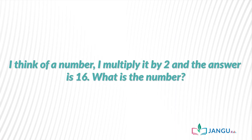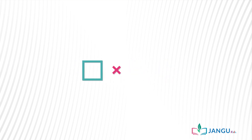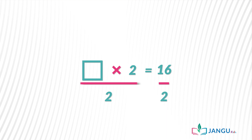I think of a number, I multiply it by 2, and the answer is 16. What is the number? So can you solve the puzzle? Unknown × 2 = 16. We divide each term by 2: (2 × unknown) ÷ 2 = 16 ÷ 2. 2 cancels out 2, and 16 divided by 2 is 8. Therefore the unknown value in the blank square box is 8.